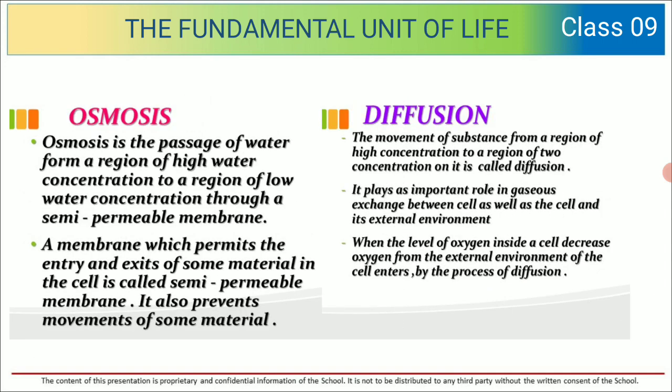What is osmosis and diffusion? Osmosis is the passage of water from a region of high water concentration to a region of low water concentration through a semi-permeable membrane. A membrane which permits the entry and exit of some materials in the cell is called a semi-permeable membrane, and it also prevents the movement of some materials.